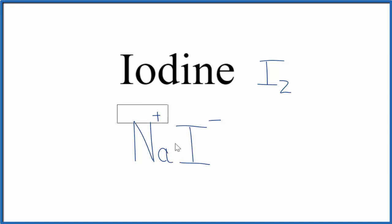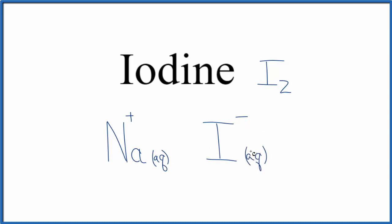If we put this in water, it's gonna dissolve. It'll split apart. Let's put an aq, aqueous, since they're in water, dissolved in water. And that gives us this iodide ion here. If the water evaporates, these two would come back together in a solid.